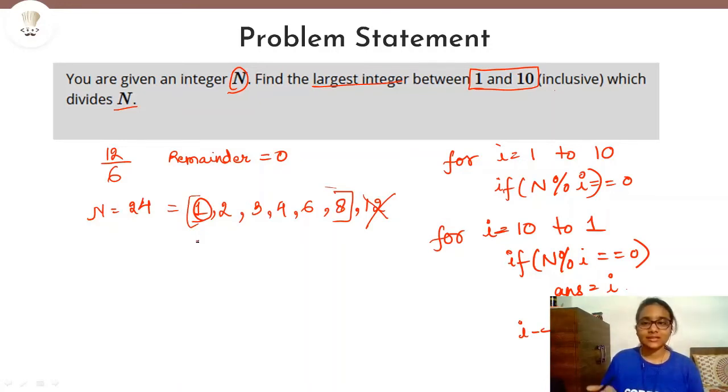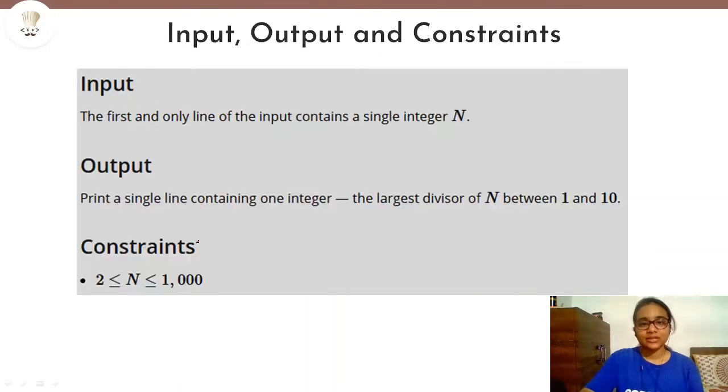So that's it guys. This was our question. Now let us see the input, output and constraints. So here you can see the first and only line of input contains a single integer N. So yes, like I took N equals to 24, you'll be given any number there, like 12, it can be 13.